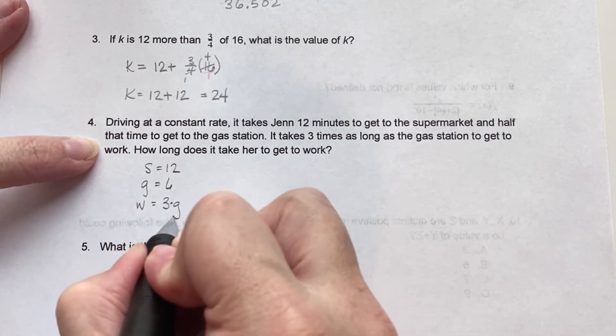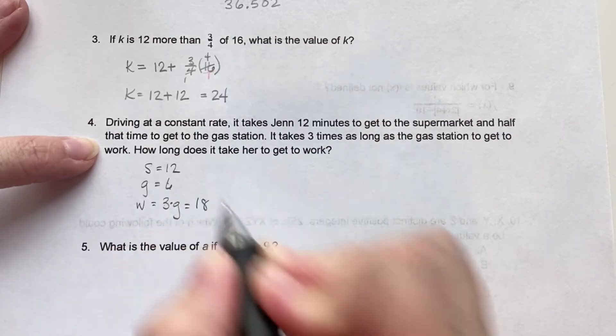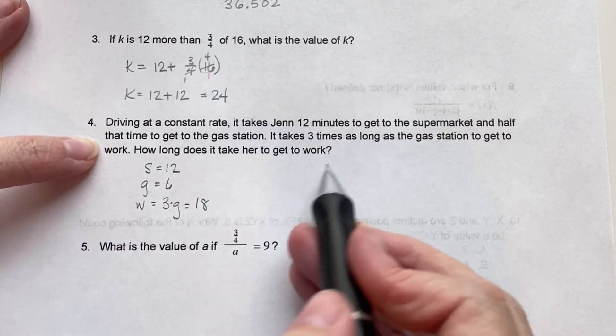So work is 3 times gas, so 3 times g, which is 3 times 6, which is 18. So how long does it take to get to work? 18 minutes.